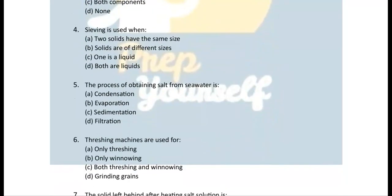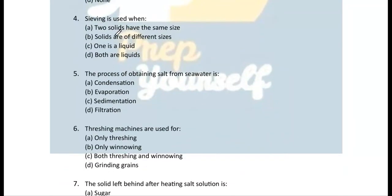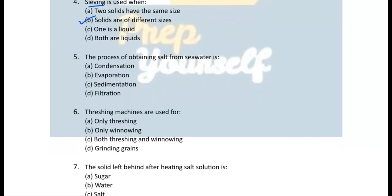Question 4: Sieving is used when — two solids are of different sizes. Sieving is a method of separation of a solid-solid mixture. Both solids should be of different sizes. So the correct answer is (b).